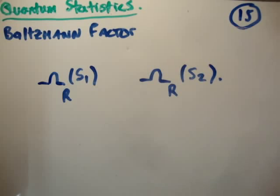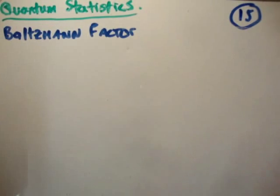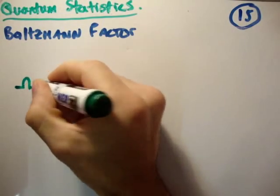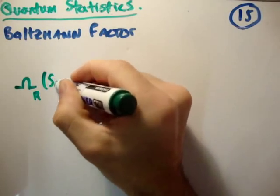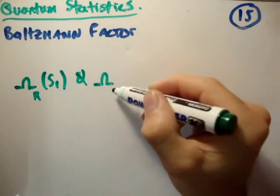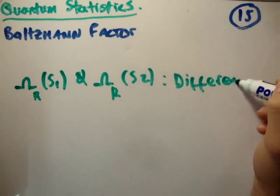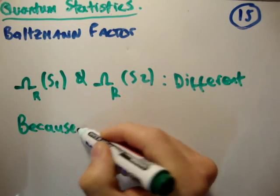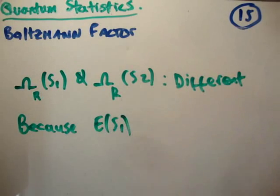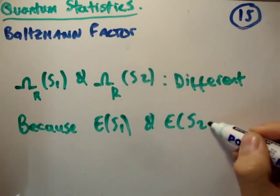The multiplicity, or the number of states available in the reservoir when the atom is in state S1, we'll write as one expression, and the number of states in the reservoir when the atom is in state S2 as another. In general, the energy of one energy level inside an atom is less than or greater than the energy of another level, and this is going to affect the multiplicity of the reservoir. The multiplicities when the atom is in state S1 versus state S2 are usually different, because the energies of the atom in those states are also different.